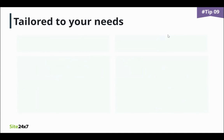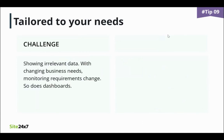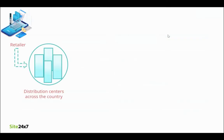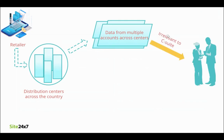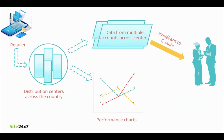Tailored to your needs. Even if data is all in one place, relevant data plays the key role. Imagine a retailer that relies on fulfillment and distribution centers across the country and needs to summarize the health of the business according to specific KPIs. They have data from multiple accounts across many different centers, but not all of it is necessary for the C-suite to understand. With a customizable dashboard, a view can be made to see incidents at specific centers against certain business functions, helping cross-reference centers with functions and see a list of incidents.